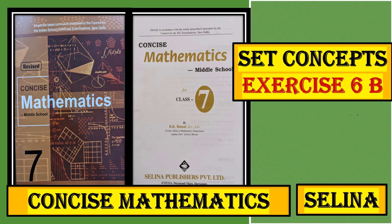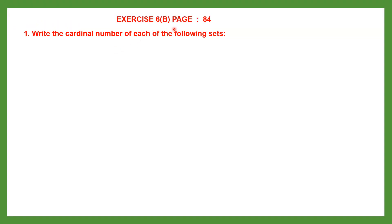Hello students, let's do set concepts exercise 6b, which is on page number 84. Now we are with the first question: write the cardinal number of each of the following sets. Cardinal number means the number of elements in each set. Suppose a set has four elements in it, the cardinal number will be four.